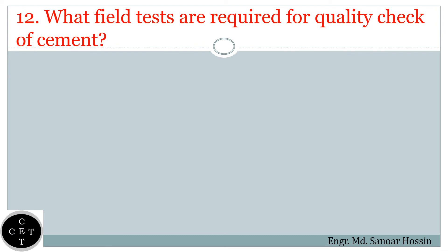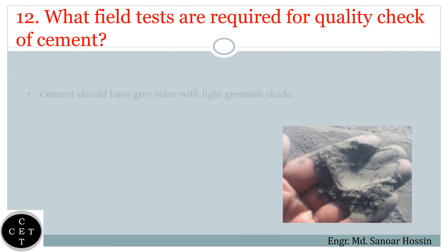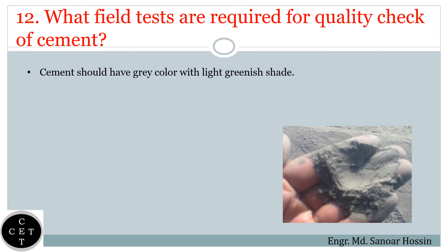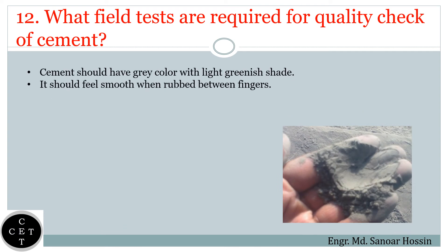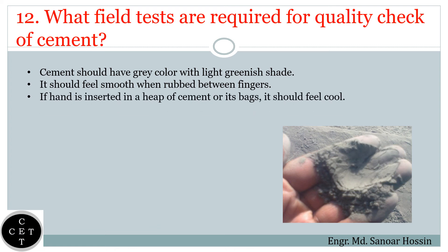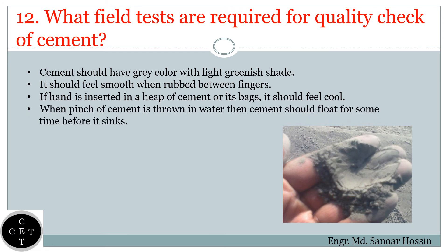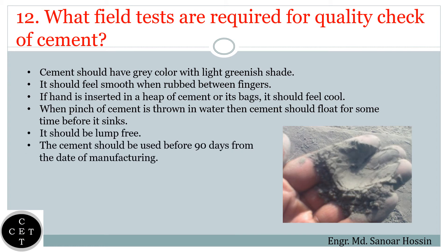Question number twelve: What field tests are required for quality check of cement? Cement should have a gray color with a light greenish shade. It should feel smooth when rubbed between fingers. If a hand is inserted in a heap of cement or its bags, it should feel cool. When a pinch of cement is thrown in water, the cement should float for some time before it sinks. It should be lump free. The cement should be used before 90 days from the date of manufacturing.